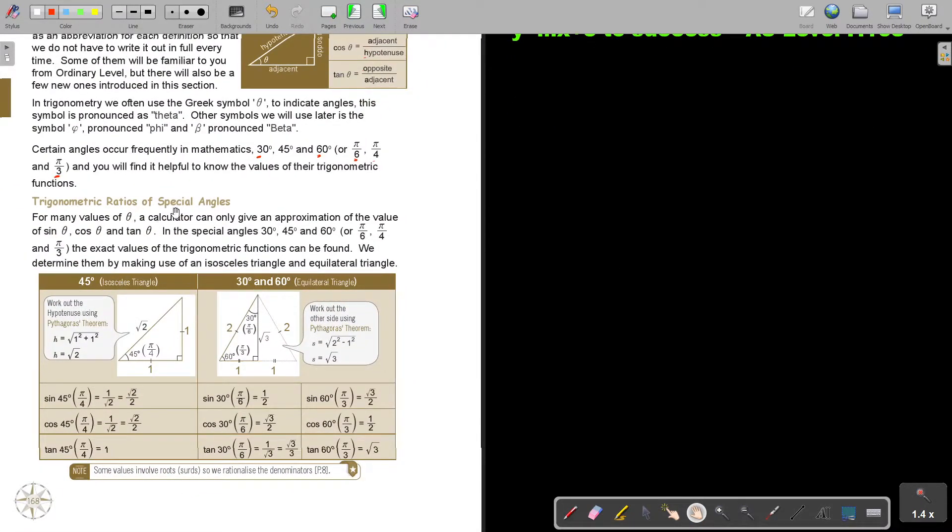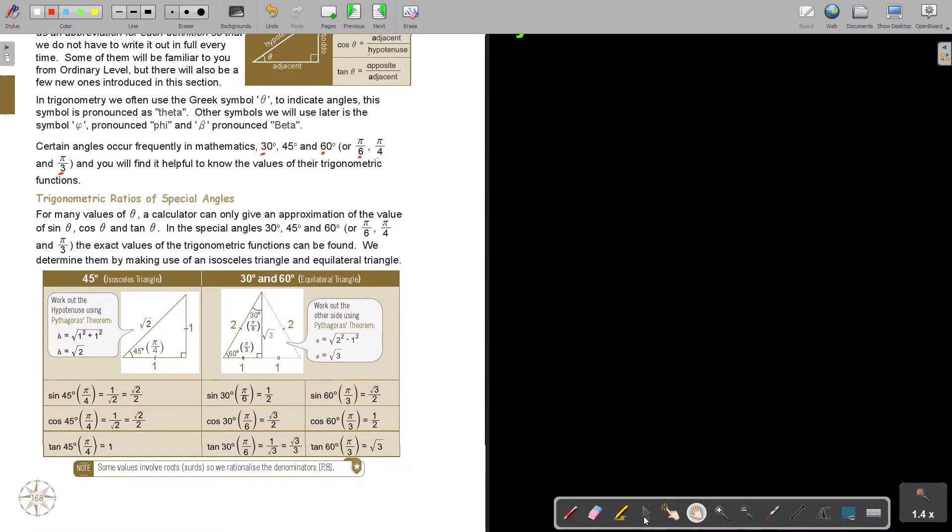This is the trigonometrical ratios of the special angles. For many values of theta, a calculator can only give an approximation of the value of sin theta, cos theta, or tan theta. In the special angles 30, 45, and 60, the exact value of the trigonometric function can be found. We determine them by making use of isosceles triangle and equilateral triangle, working in radians.